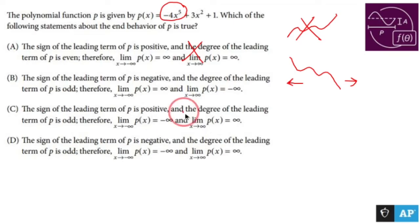This won't do it, and this won't do it. Now let's just make sure that the reasoning is acceptable. The sign of the leading term of p is negative, and the degree of the leading term is odd. Therefore, there you have it. So B is my guy.